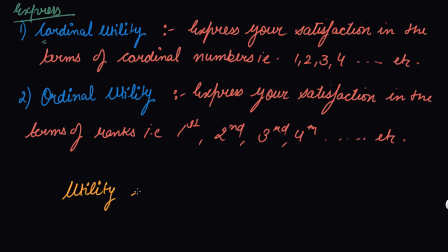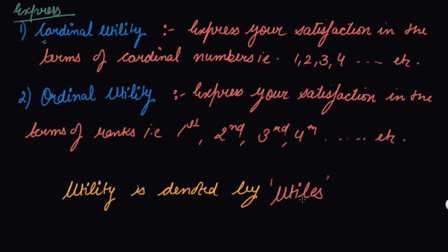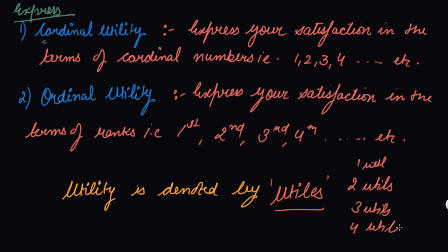Your utility is denoted by utils. One util means you get the satisfaction of one util, two utils, and so on. The unit of utility is utils — so you measure your utility in utils.